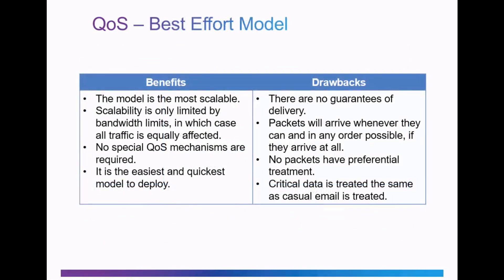Looking at some of the benefits and drawbacks of the best effort model, under benefits, no special QoS mechanisms are required, and it is the easiest and quickest model to deploy. However, under drawbacks, there are no guarantees of packet delivery. No packets have preferential treatment, and critical data is treated the same as casual email. Basically, this is a non-QoS solution.